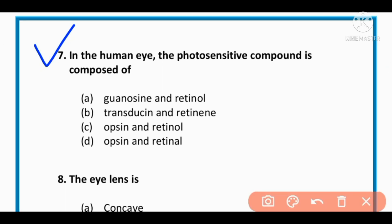MCQ number 7: In human eye, the photosensitive compound is a compound of: opsin and retinol, transduction and retinal, opsin and retinol.